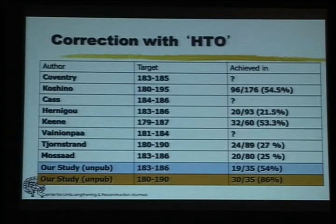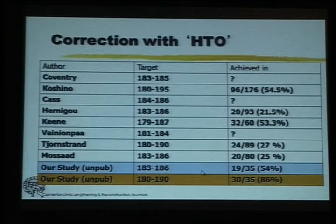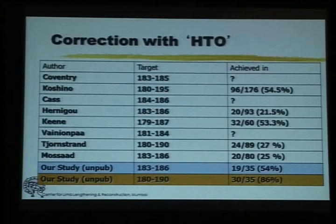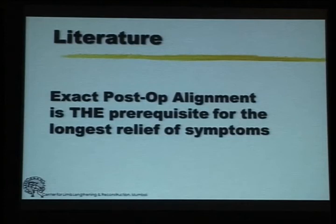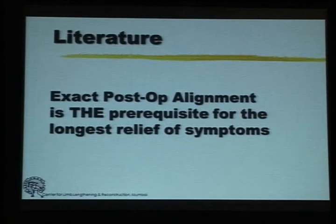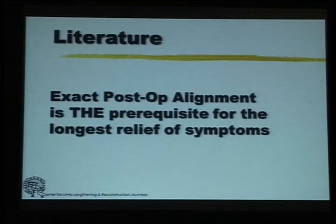In our study, when looking at the 183 to 186 degree criterion, many other studies achieve it a maximum of only 25 percent of the time. We were able to achieve it 54 percent of the time, using a combination of the angle and where the line passes through the tibial spine. This is important because all the literature shows that long-term results of high tibial osteotomy correlate only with the precision of axis correction — not with patient weight, not with the degree of preoperative x-ray damage, and not with the age of the patient at the time of surgery.